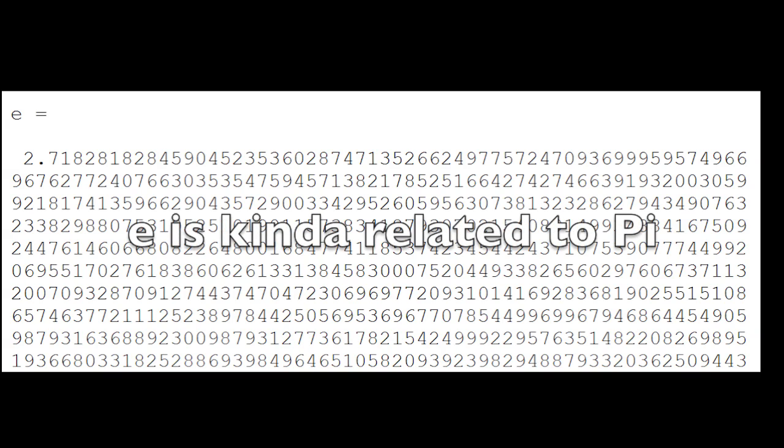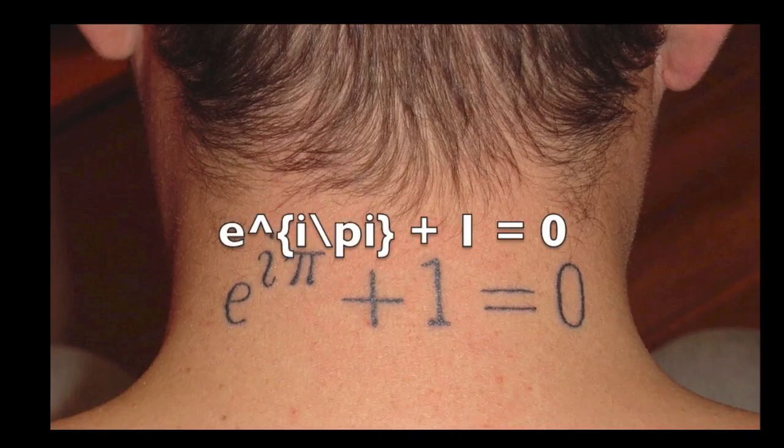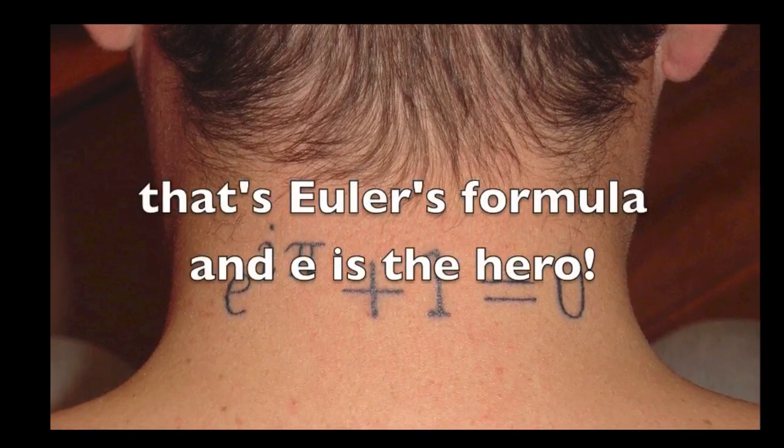E is kinda related to pi, both irrational, they go on and never die. E to the i pi plus one equals zero, Euler's formula. And E is the hero,